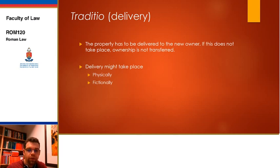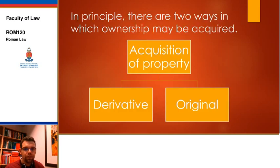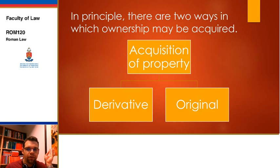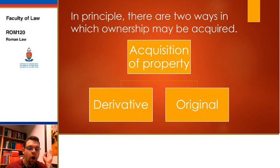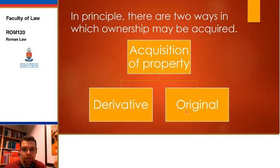In principle there are two ways in which ownership could be acquired. We started off by talking about derivative acquisition, but the main area with issues is original methods of acquisition of ownership. If derivative requires someone to work with you — the previous owner must cooperate — then original methods are basically the opposite. No one needs to help you. The owner need not be involved at all. There might, in fact, not be a previous owner.